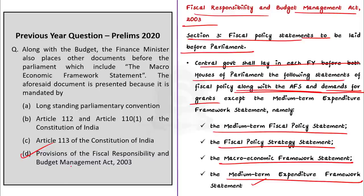Article 110 is about the money bill and Article 112 is about the annual financial statement, which is the budget. Article 113 is about procedures in parliament with respect to estimates. You don't have to memorize all articles in the constitution, but some are very important — like Articles 110 and 112. Apart from that, you need to know the fundamental rights and the directive principles of state policy.